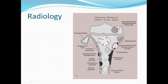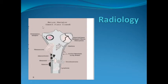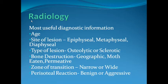In a skeletally mature individual, where the epiphysis has fused with the metaphysis and there is no open physis, an eccentric lesion at the end of the bone is most likely a giant cell tumour. So age and site together — along with whether the lesion is lytic or blastic and the type of bone destruction — can help make the diagnosis 80 to 90 percent of the time.